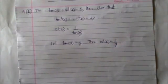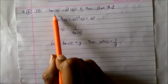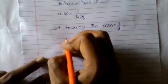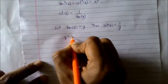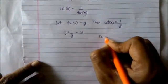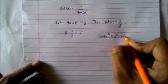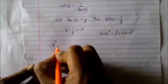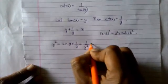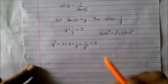Because cot x is 1 upon tan x. Now the given equation is tan x plus cot x equal to 3. Using my new nomenclature, I can write y plus 1 upon y equal to 3. Now if I square both sides using the formula (a + b)² = a² + 2ab + b², I will get y² + 2·y·(1/y) + 1/y² equal to 9, because the square of 3 is 9.